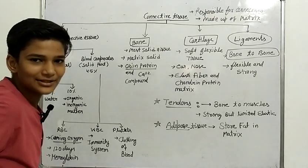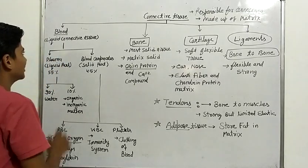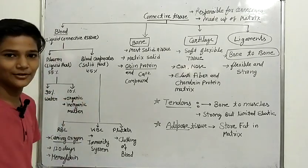First, blood. Blood is a special type of connective tissue because it is the only one that is liquid connective tissue.